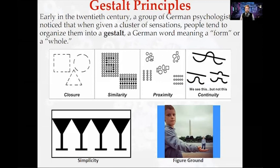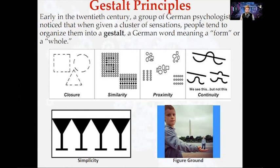So, Gestalt principles. There are various principles of Gestalt. First, closure: when we're given an incomplete figure, we fill in the gap. We also tend to visually group things that are similar looking — you might perceive something as two parallel lines, or as a five or an S, depending on how you're looking at it. And with proximity, when things are close together, we tend to group them together.